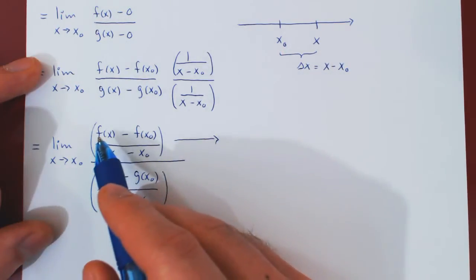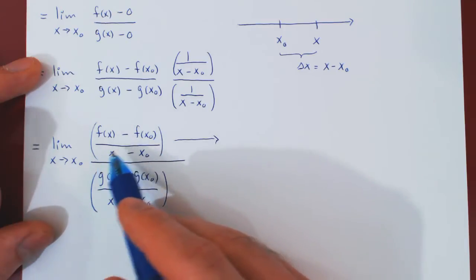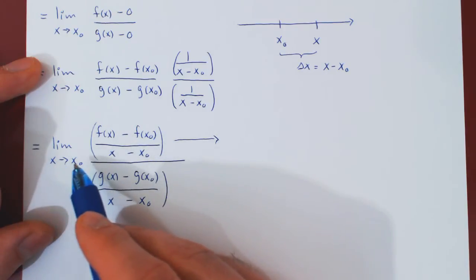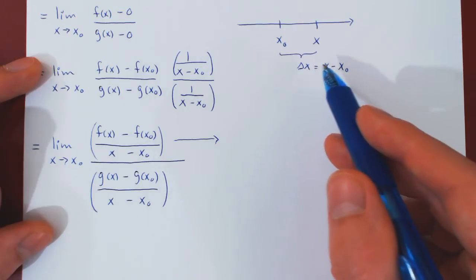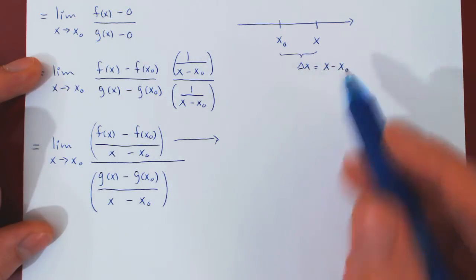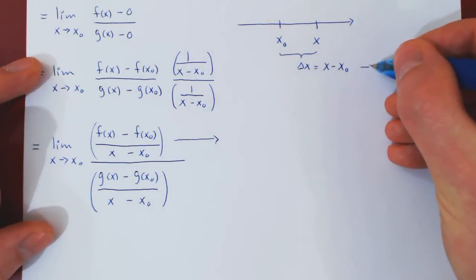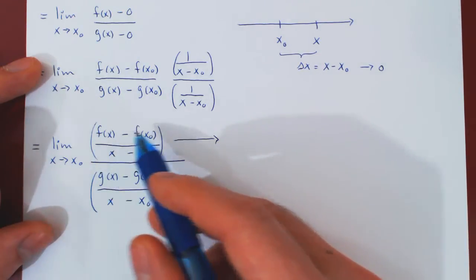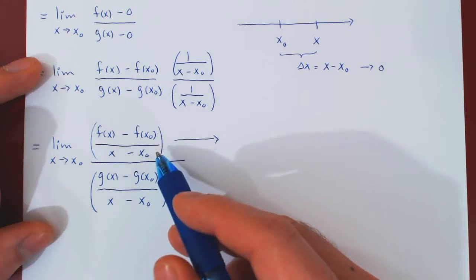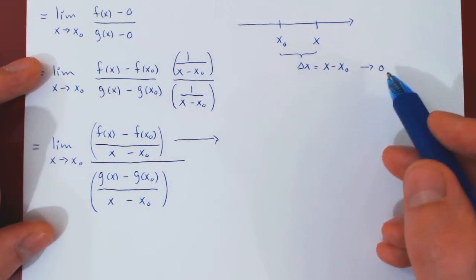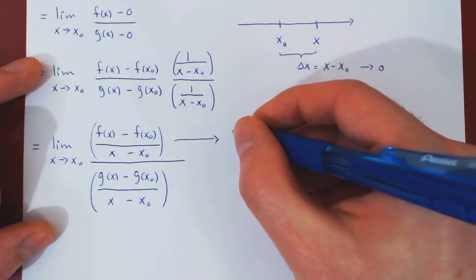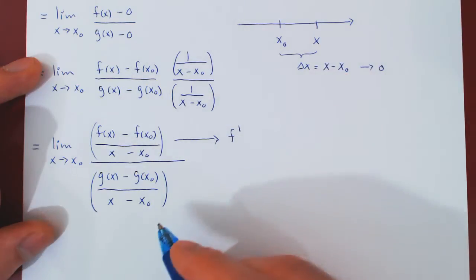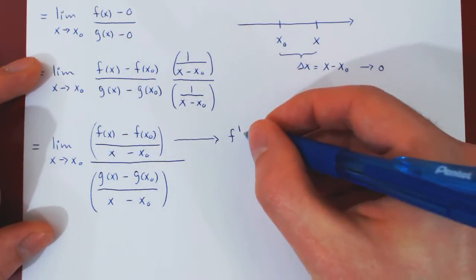We have the change in y for f over the change in x. But as x approaches x₀, then x - x₀ is naturally approaching 0, so Δx is shrinking to 0. Therefore, the change in y over the change in x, as the change in x approaches 0, will return the derivative of the function at the given point of interest, namely x₀.